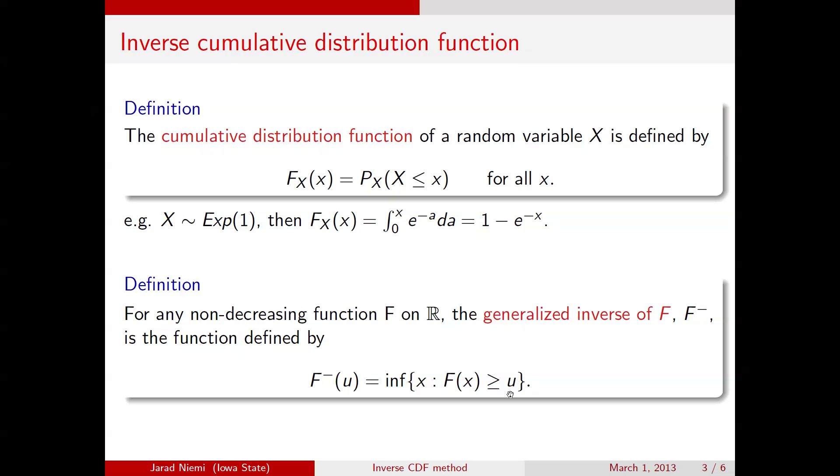All right, so this is basically to cover the case of both continuous and discrete random variables. If we have a continuous random variable, we typically, if available, we can just take the inverse itself of the cumulative distribution function.